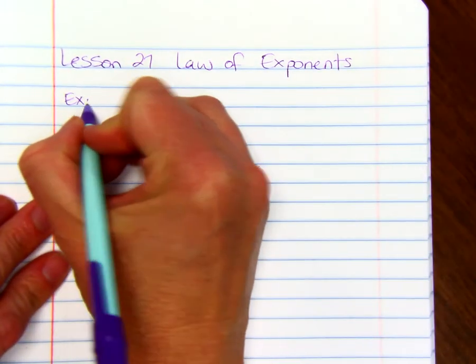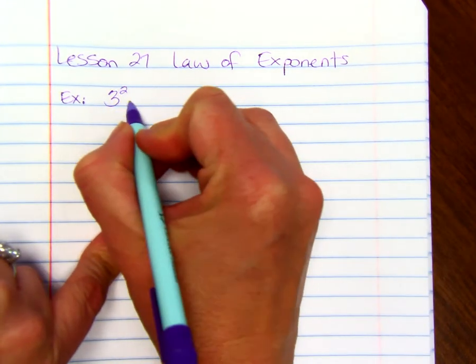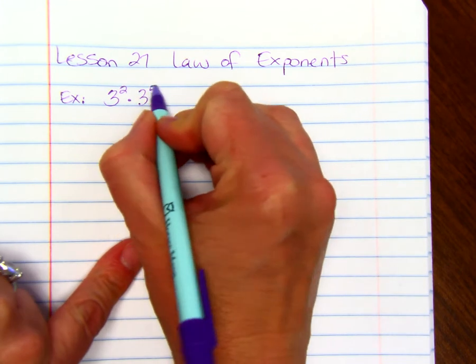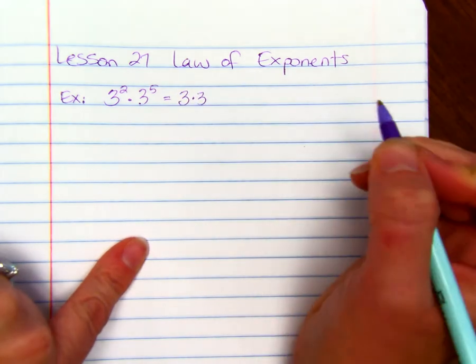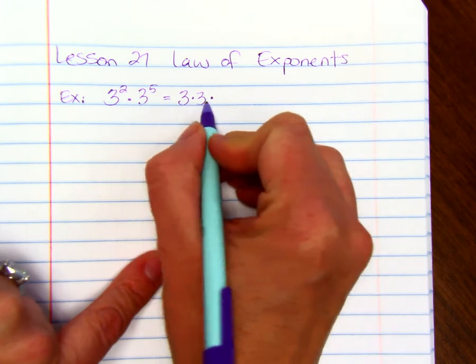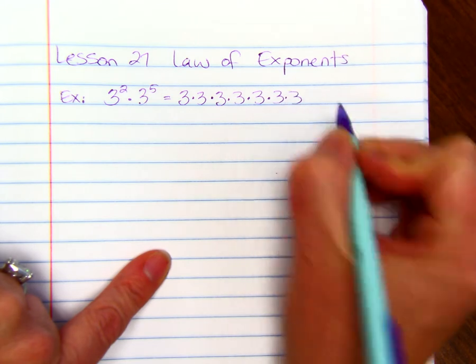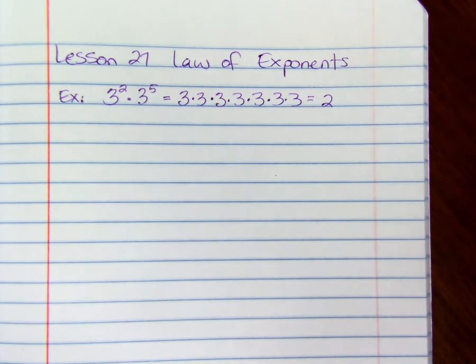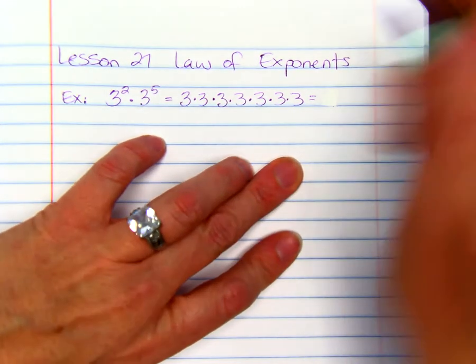So when we have an exponent, say 3 squared, and we want to multiply it by another exponent that has the same base. What this means, the 3 squared just means that we're doing 3 times 3. And the 3 to the 5th power, so we're timesing 3 squared times 3 to the 5th, is just multiplying 5 threes together. And that just equals 3 raised to the 2 plus 5 power.